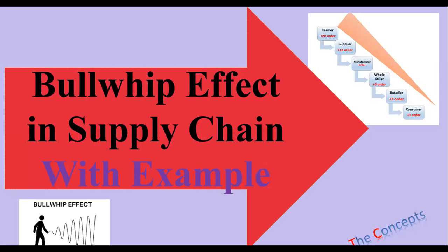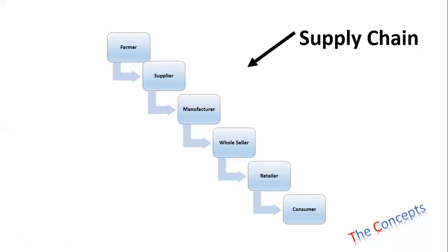Welcome to another video in which we will talk about an important concept of supply chain management known as the bullwhip effect in supply chain. At the end we will also be using a typical example from our daily life. In order to understand this concept, we first need to understand two things: what is supply chain management, and what is the bullwhip effect. Supply chain consists of two words — supply and chain.